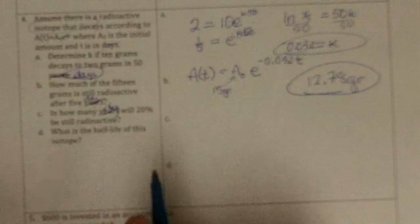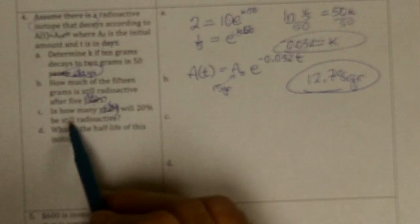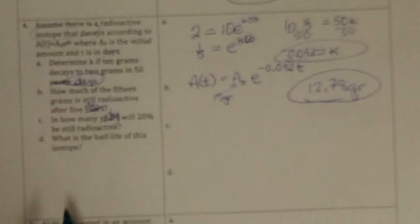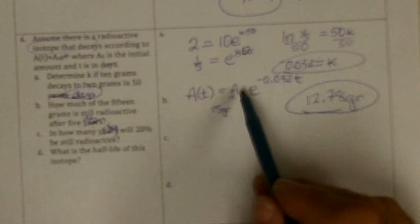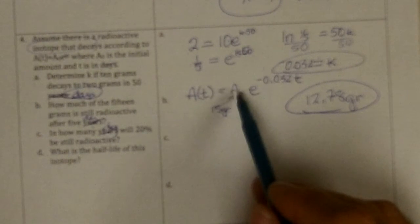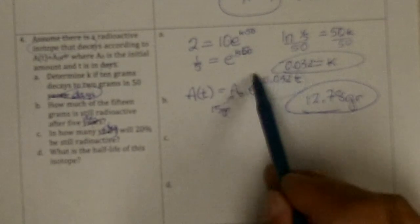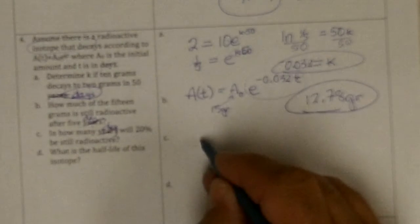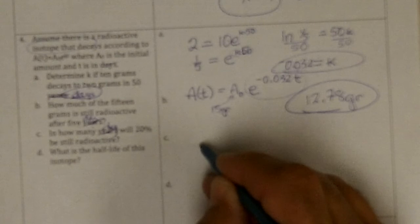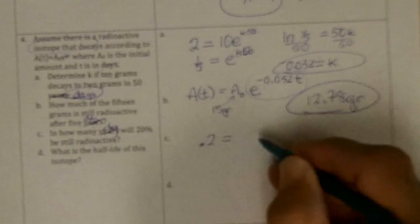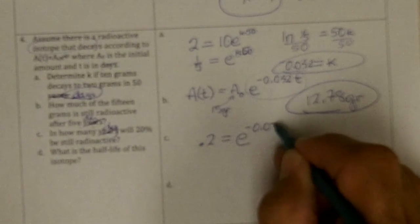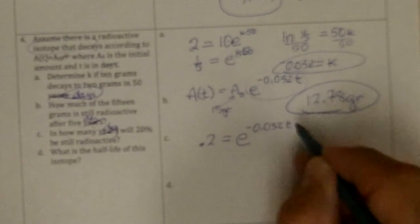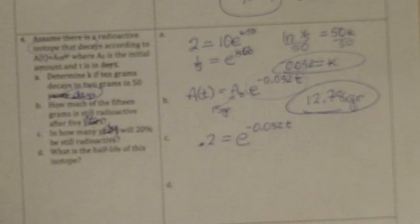And c, in how many years will there be 20% still radioactive? So like I talked about in class, all we need to be 20% left. This would have to be 20%. So I've got the equation, 20% is 0.2.